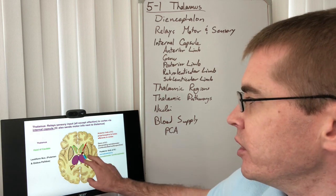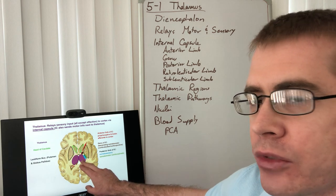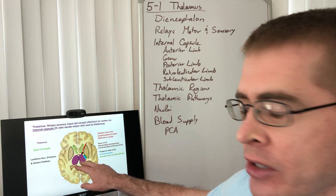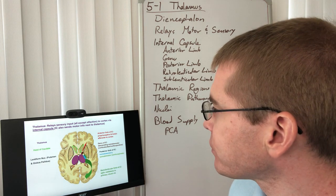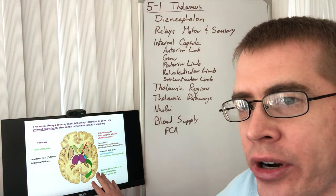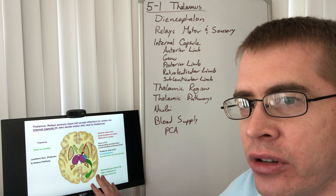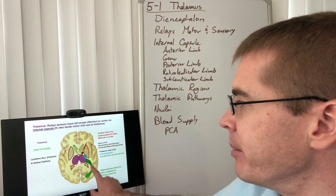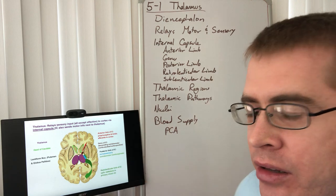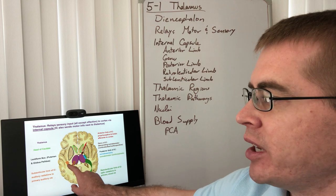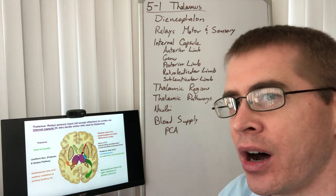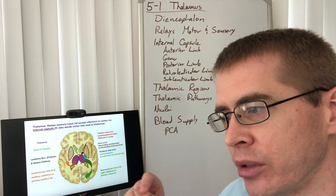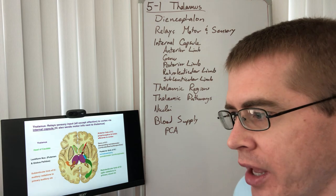The posterior limb also separates the lentiform nuclei from the thalamus — if you see the posterior limb, you're bound to see the thalamus. The optic radiations are called the retro-lenticular limb, because they're heading behind the lentiform nuclei. We also have a sub-lenticular limb heading into the insular cortex, sending auditory information as well as gustatory information to the primary auditory cortex, with some gustatory information from the thalamus also heading to the anterior insula.